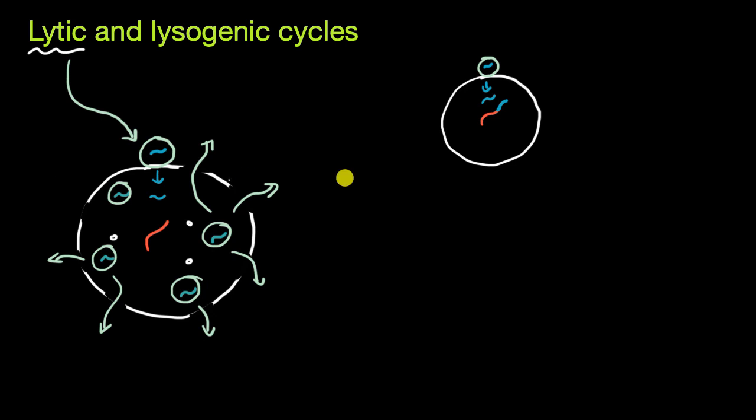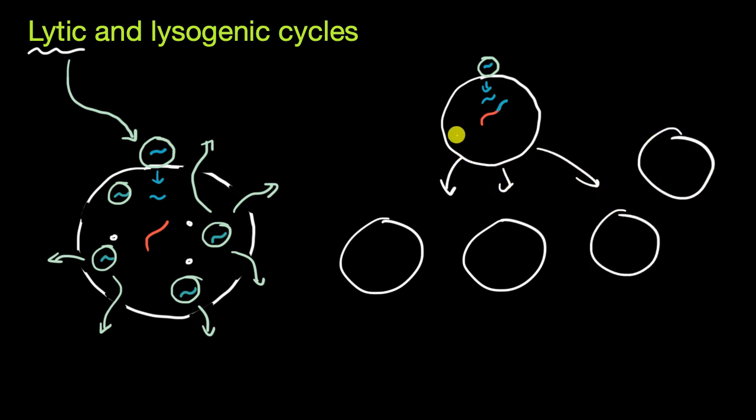And then when the organism itself replicates, or in this case, the cell replicates, there's just more cells. It divides from one into two, from two into four, et cetera.